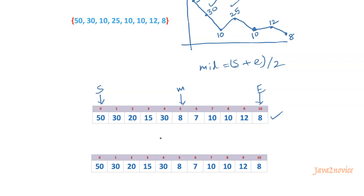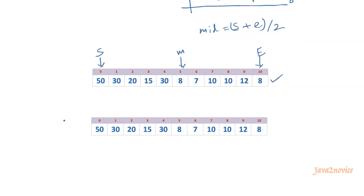How to adjust? If you are moving left, keep your start position constant and move your end pointer to mid minus 1. If moving right, keep your end position constant and move your start pointer to mid plus 1. In our case, we are moving left, so the start pointer stays at index 0 and end becomes mid minus 1, which is index 4. The new mid is (0 + 4) / 2 = index 2, which is element 20. Is it a peak element? No. Again we check with its left neighbor — 30 is greater than 20, so we continue searching on the left.